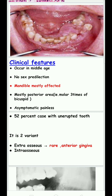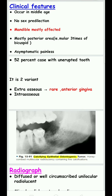Clinically it occurs in middle-aged people with no sex predilection. The mandible is mostly affected, particularly the posterior molar area — three times more than the bicuspid area. It is asymptomatic and painless. 52% of cases are associated with an unerupted tooth. There are two types: extra-osseous and intra-osseous.